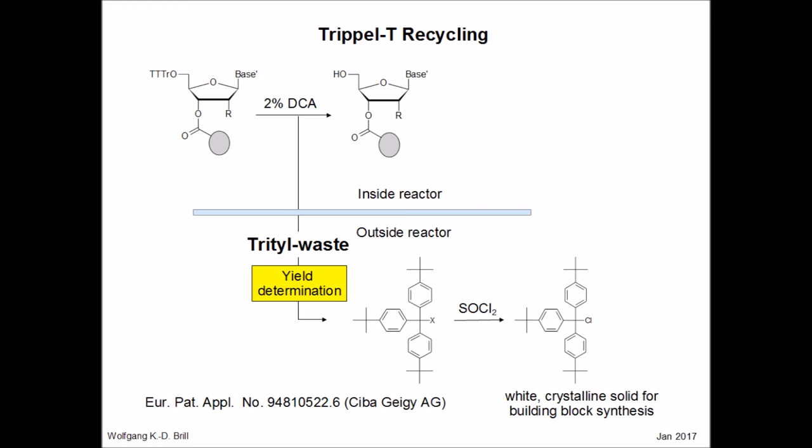Long triple-T oligos do have sufficient retention for facile reverse-phase purification. Triple-T is readily recycled. During the triple-T recycling process, the detritylation solution is drained from the reactor and the yield of the coupling is determined. The solution is then evaporated and the dichloromethane recovered. The resulting trityl species are then converted to triple-T chloride with thionyl chloride, which can be obtained in crystalline form as a commodity for use in monomer synthesis.